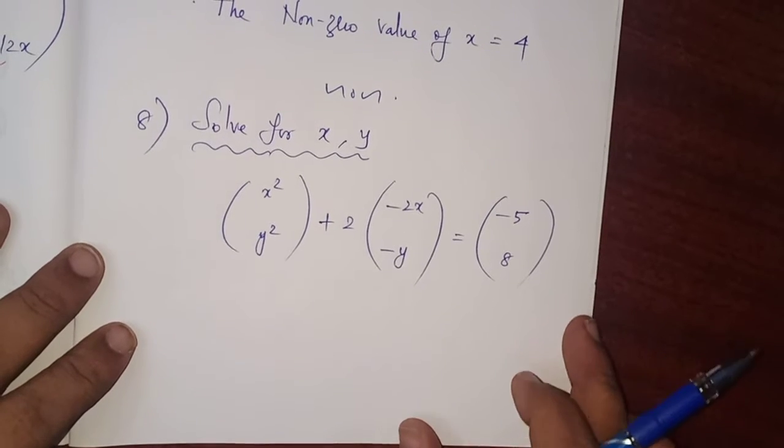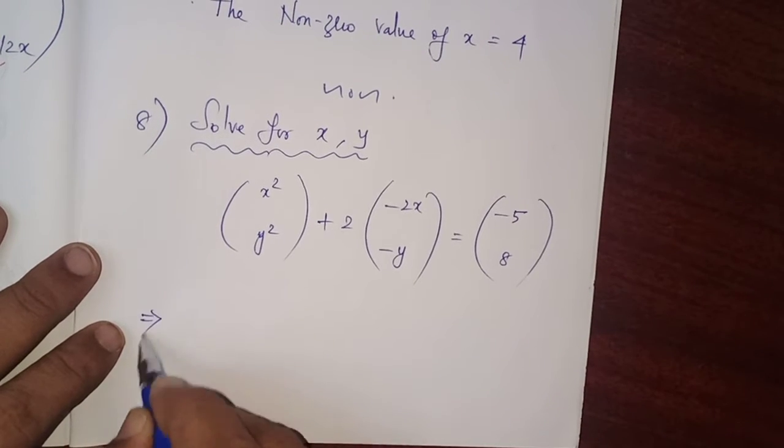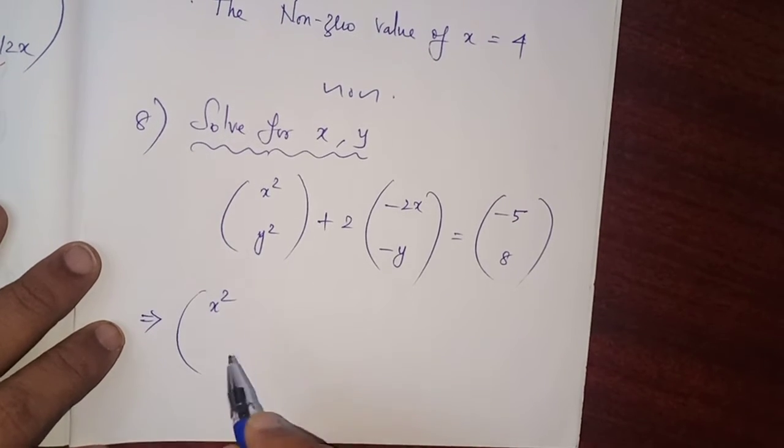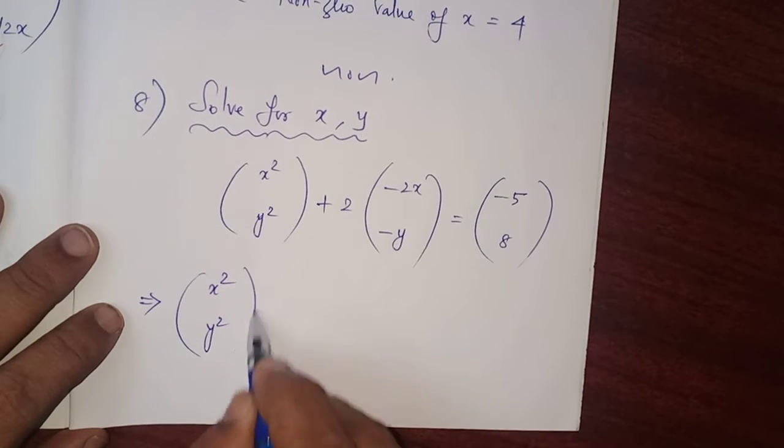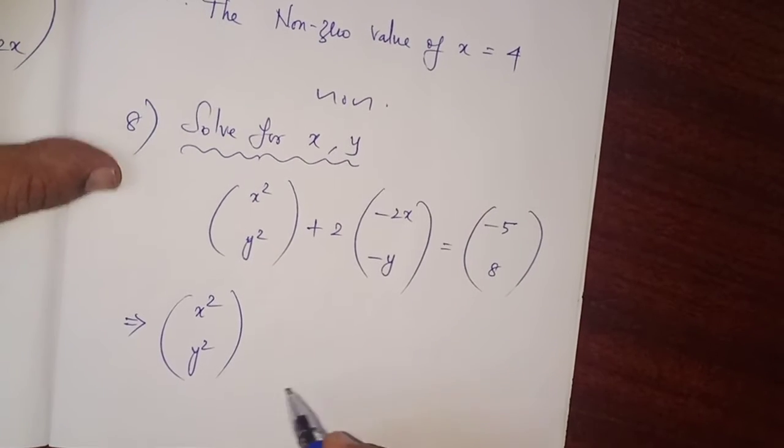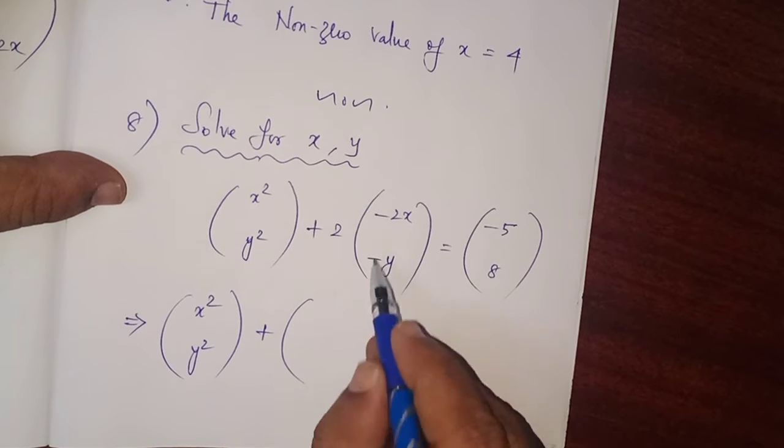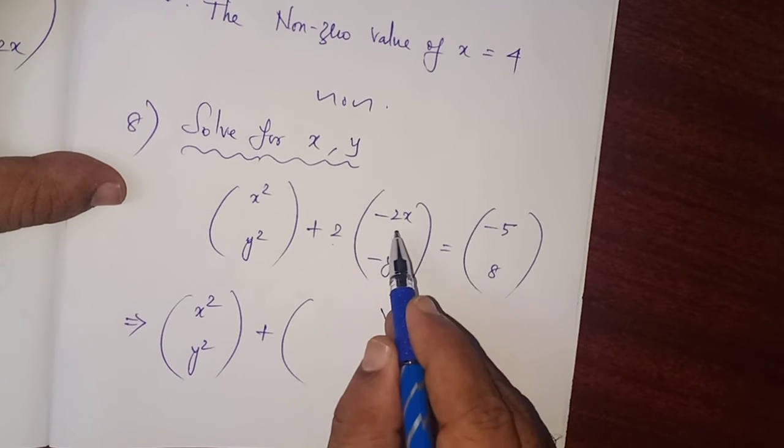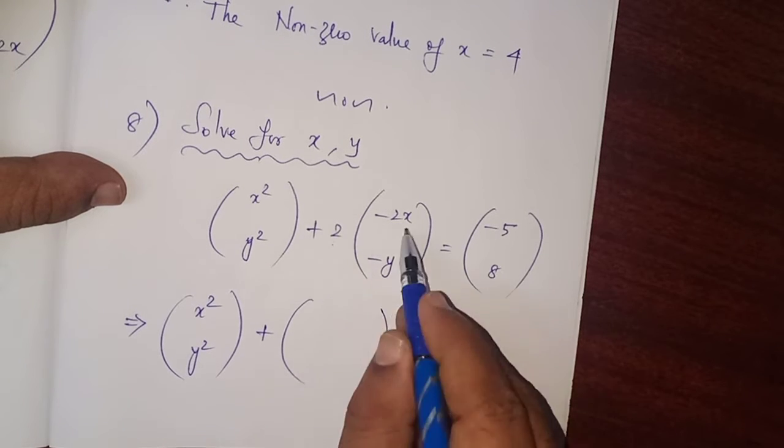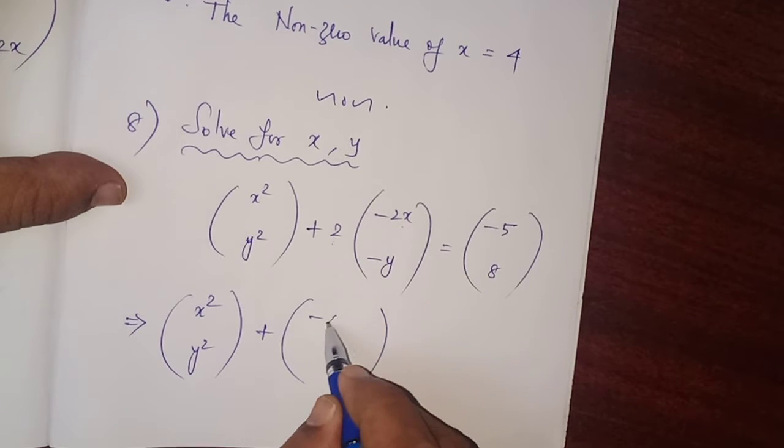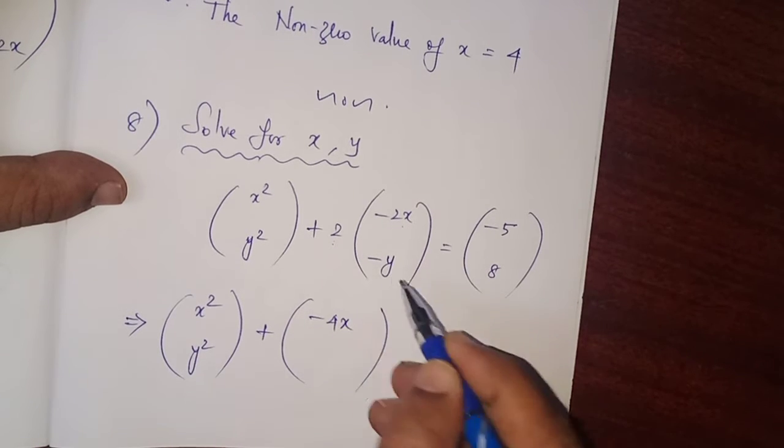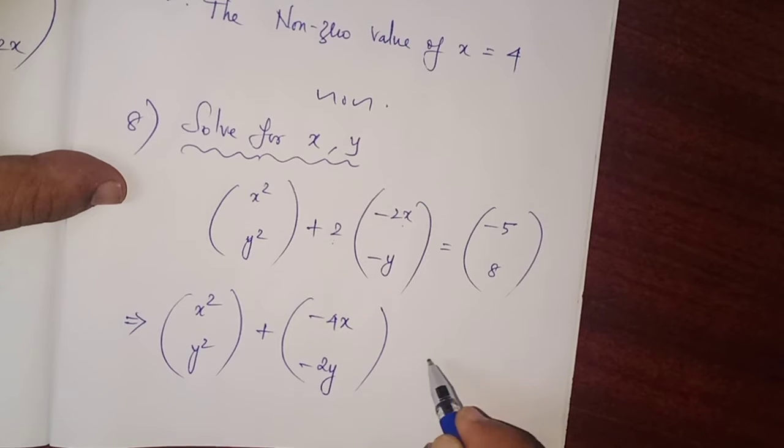Here is the equation, which implies write x squared and y squared as it is, plus outside the bracket we have 2, so multiply these by 2. 2 into minus 2x is minus 4x, 2 into minus y is minus 2y, that is equal to minus 5, 8.